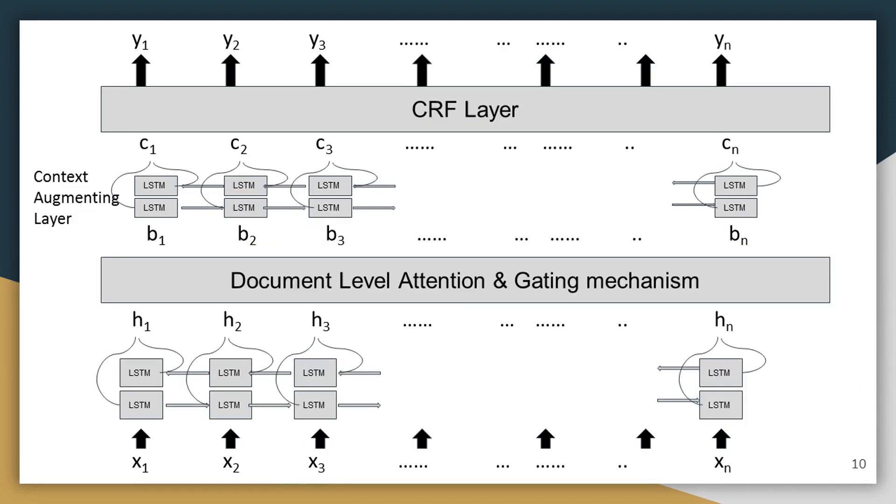Now putting them into the framework, first we have this word level representation x1 to xn which we send into an LSTM layer to obtain h1 to hn as hidden state representations. We pass them to document level attention mechanism and gating mechanism to obtain representations b1 to bn. Then we pass them again to an LSTM layer.